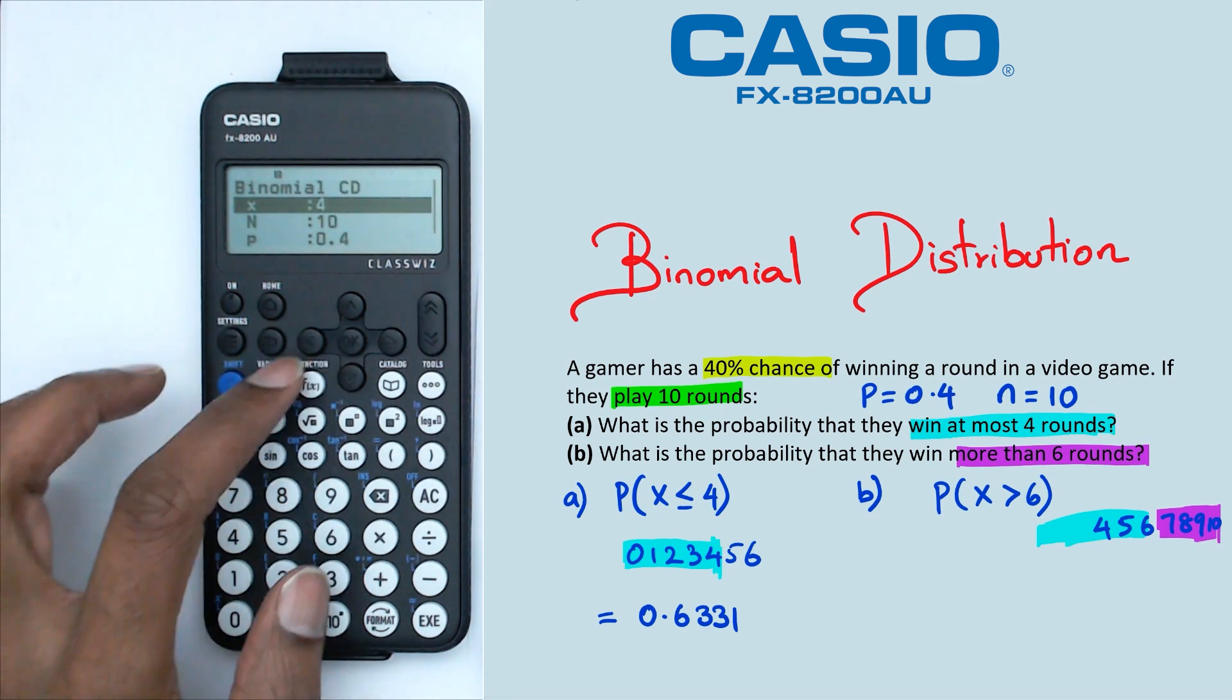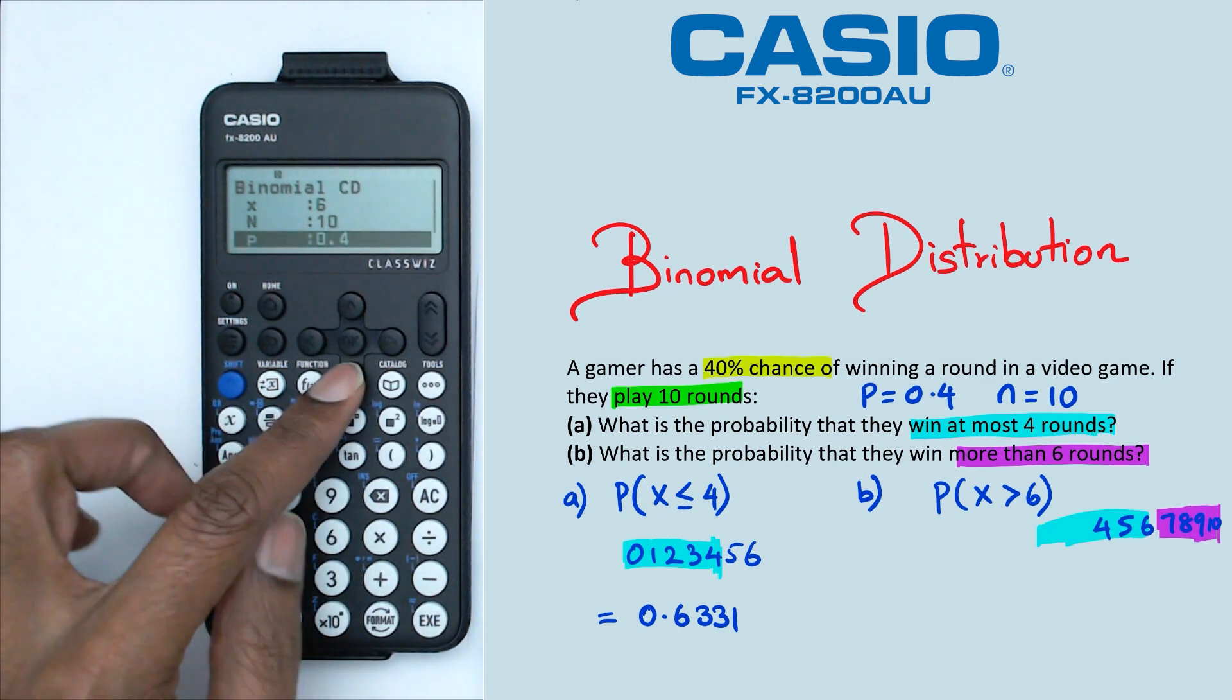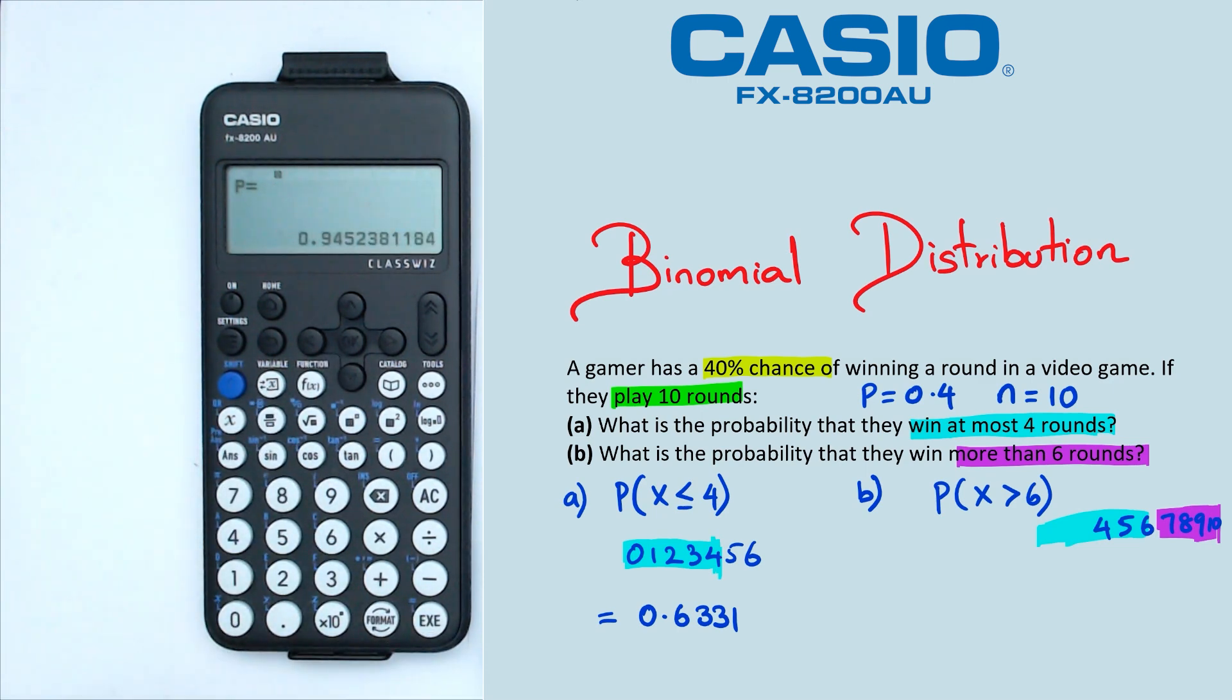So in our calculators, we're going to go back to our calculators. We're going to change x to 6, and n is still 10, 0.4 as probability, and we're going to click execute. So what we're getting here is when we calculate probability of x less than or equal to 6, we're going to get 0.9452.